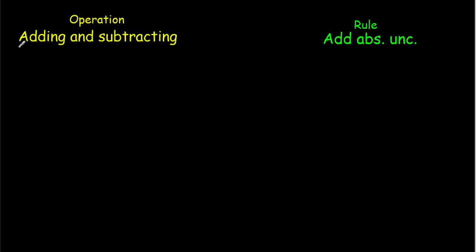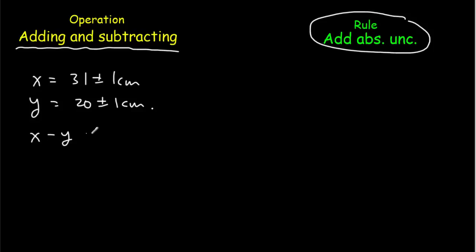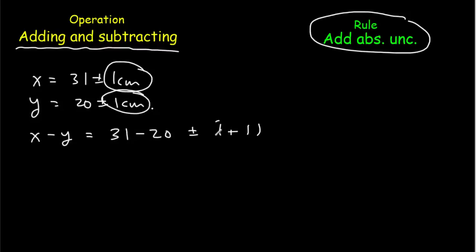Rule 2 applies when you're adding or subtracting: simply add the absolute uncertainties. Suppose x equals 31 plus or minus 1 centimeter and y equals 20 plus or minus 1 centimeter, and we want to calculate x minus y. The value is 31 minus 20 equals 11, and the uncertainty is 1 plus 1 equals 2 centimeters, giving a final answer of 11 plus or minus 2 centimeters. Notice that when subtracting, the uncertainty can become quite large compared to the value — if the value had been 21, we'd get 1 plus or minus 2 centimeters.